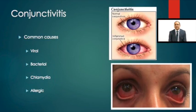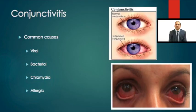Listed here are the main types of infection that cause conjunctivitis: viruses causing viral conjunctivitis, bacteria causing bacterial conjunctivitis, and chlamydia causing chlamydia conjunctivitis. I've also listed allergic conjunctivitis here because, while it is not an infection, it can look similar to the infectious forms.